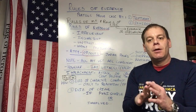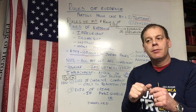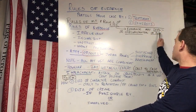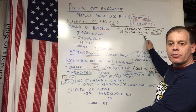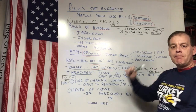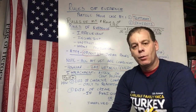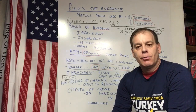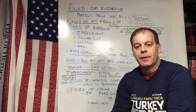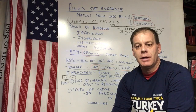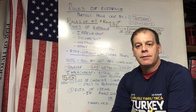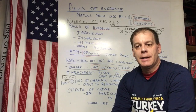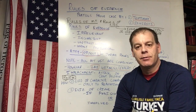Evidence can also be one of two things: it can either be direct evidence or it can be circumstantial evidence, or it can be both. This information comes from the back of your mock trial packet where it talks about the judge's instructions to the jury — it talks about direct and circumstantial evidence, and I want to touch on that as we talk about evidence because I think it's an important concept.